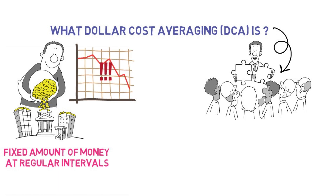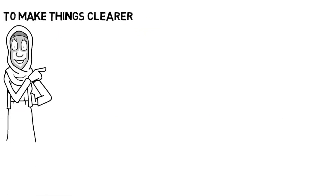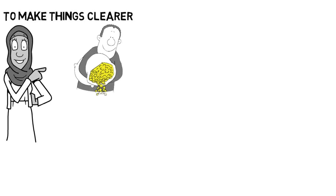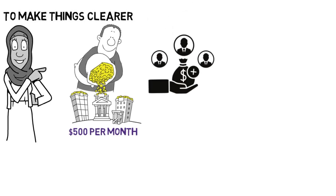This means that you buy more shares when prices are low and fewer shares when prices are high. To make things clearer, let's meet our investor, Sarah. Sarah decides to invest $500 per month in a mutual fund over the next year using this strategy.